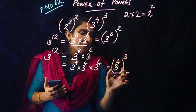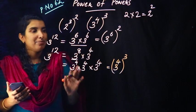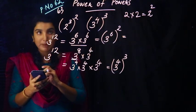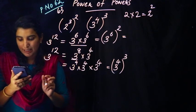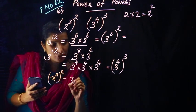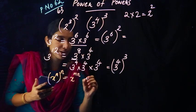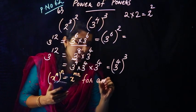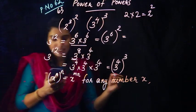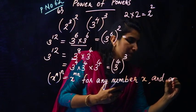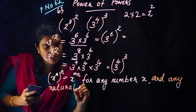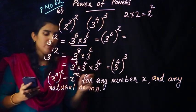3 raised to 4, the all raised to 3. These are the values we have. This is the formula on page number 63: h raised to m, the all raised to n, is equal to h raised to m×n, for any number h and any natural numbers m and n.